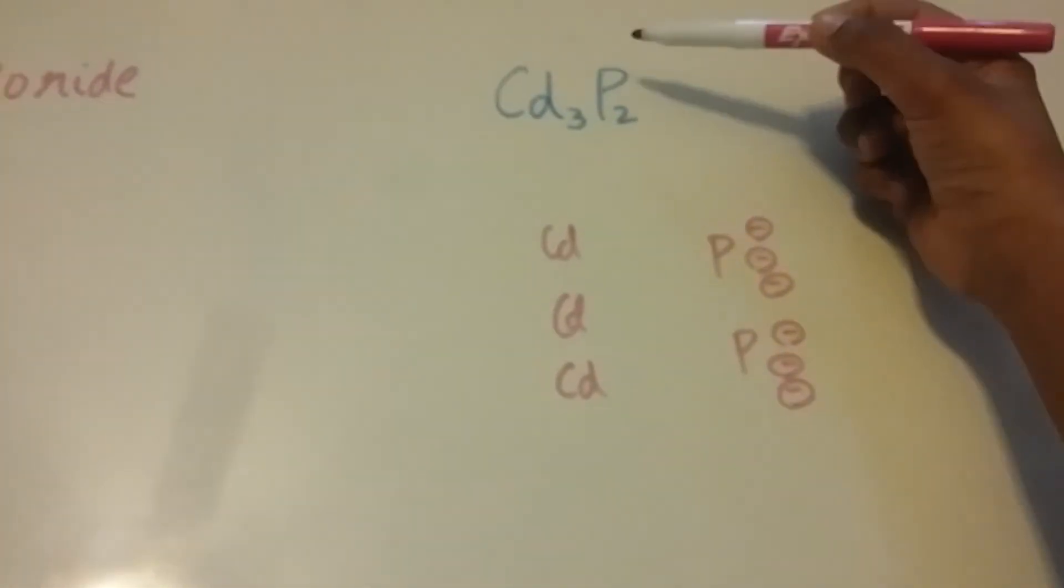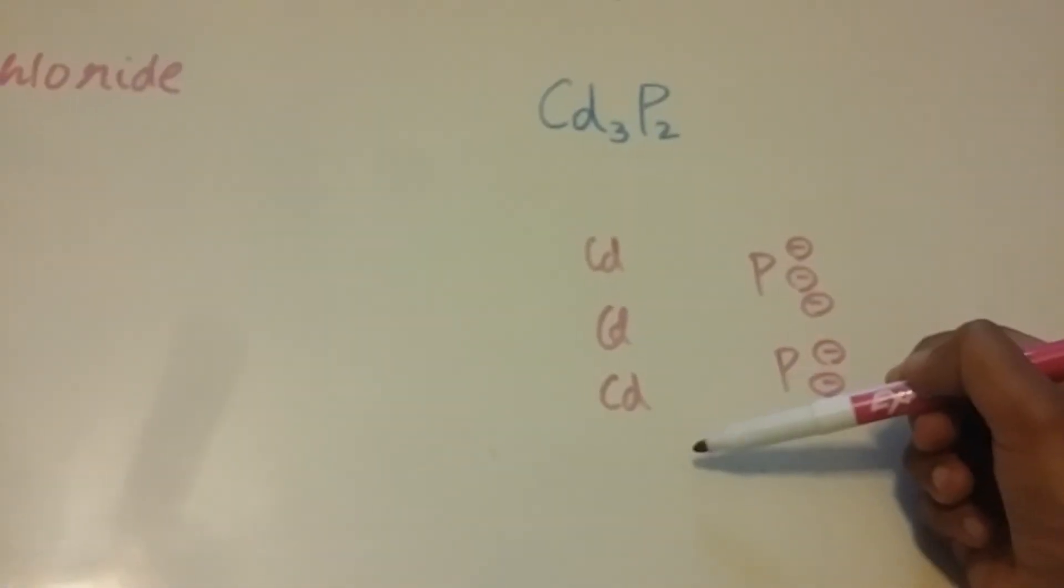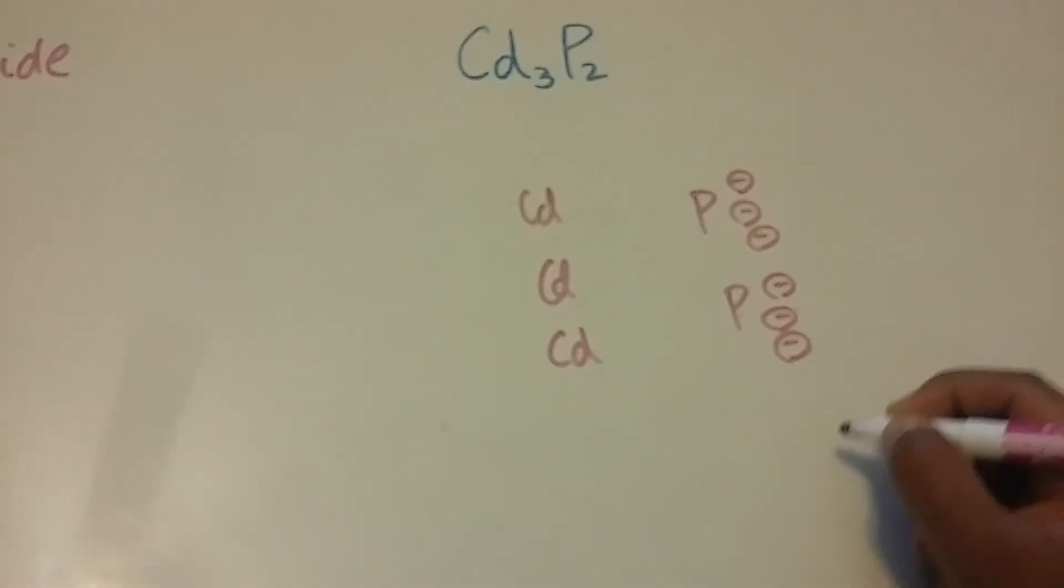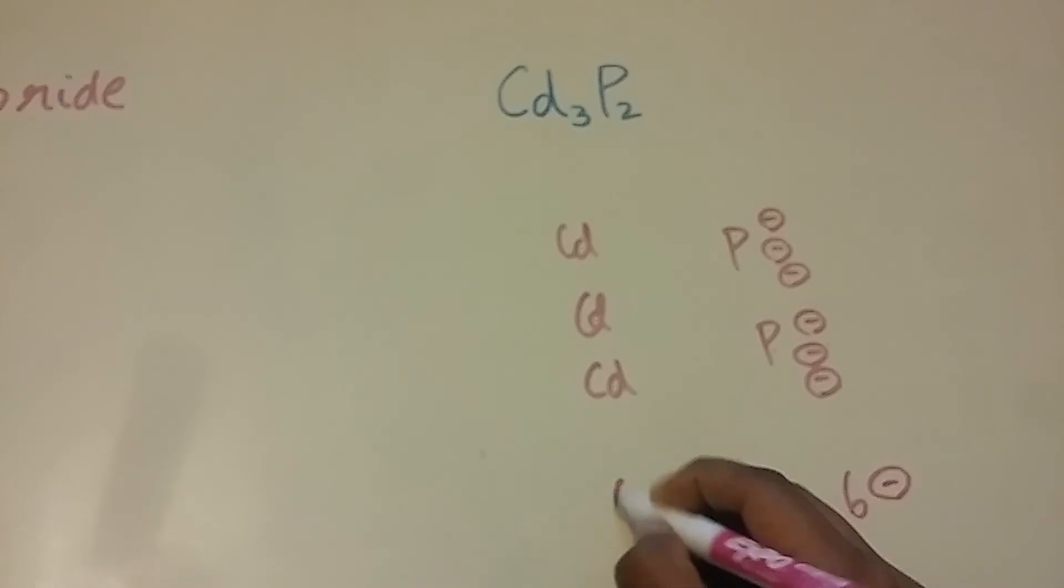And again, the overall compound doesn't have a charge. That means whatever is over here is balanced out with whatever is over here. So if this one has six negative charges, then this one should have six positive charges.